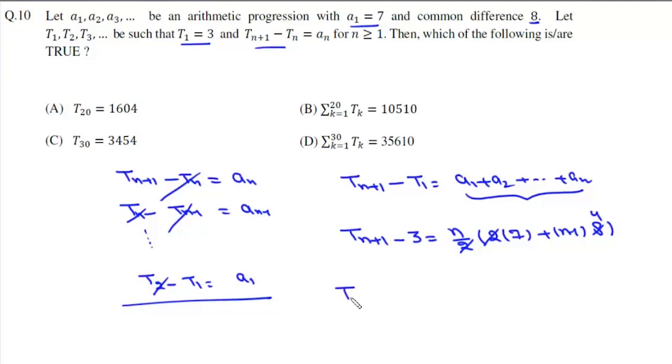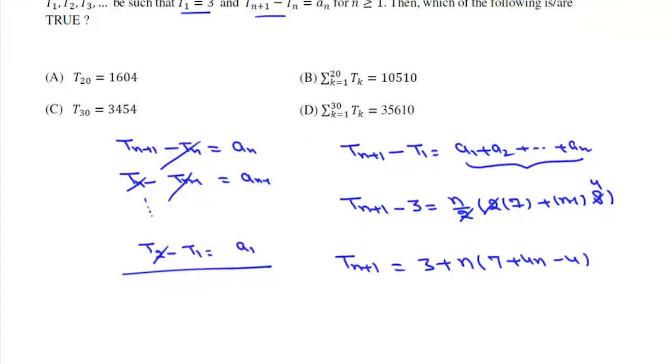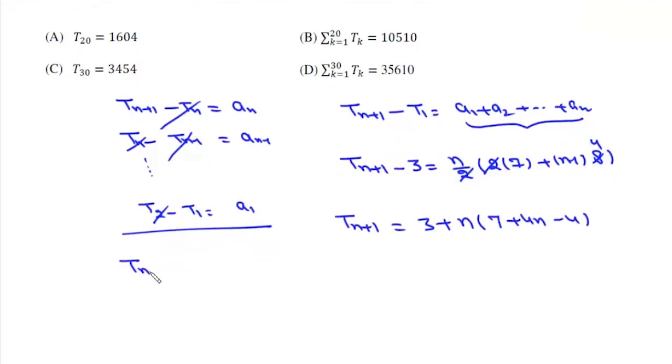This is 2 and this is 4, so this Tₙ₊₁ will be 3 + n(7 + 4n - 4). So basically this Tₙ₊₁ will be 4n² + 3n + 3.